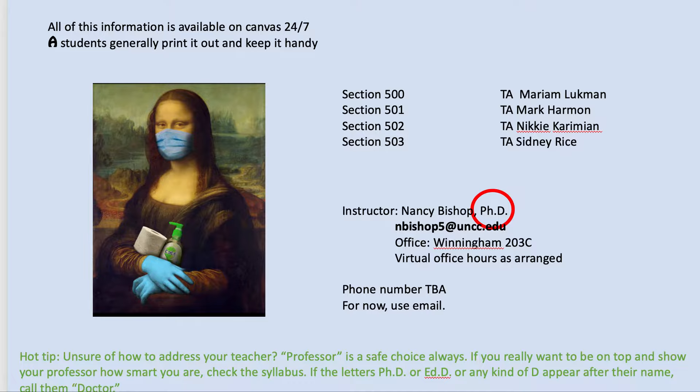Each section has its own TA, so you need to know what your section is. If you print this out, there's a space right underneath for you to write down your TA's email so that you know how to get in touch with them. Also make a note of what section you're in — a lot of students have no idea when I ask them.